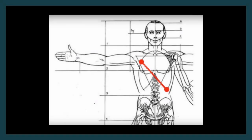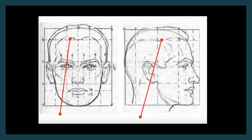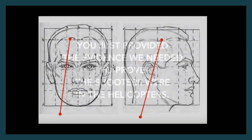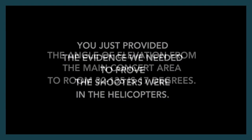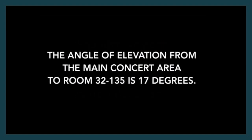Recently, a series of videos made a claim that steep wound angles present among some of the Vegas shooting victims are supposedly evidence of an attack from helicopters, given that the angle between Paddock's suite and the festival was roughly 17 degrees.